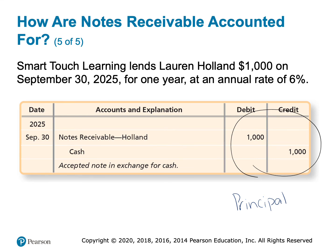Since this is a one-year loan, this would be a current asset. If it were a three-year, two-year, or even an 18-month loan, it would be a long-term asset. But 12 months or less is a current asset, so this notes receivable would show up in our current asset section.